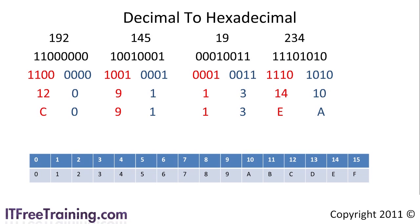Certain IP version 6 addresses have IP version 4 addresses embedded in them. It is important to understand how to convert decimal to hexadecimal to understand IP version 6 addresses.